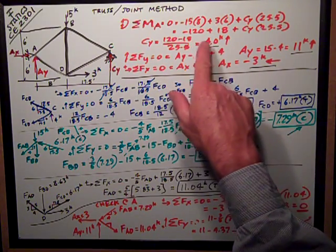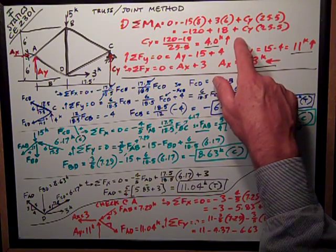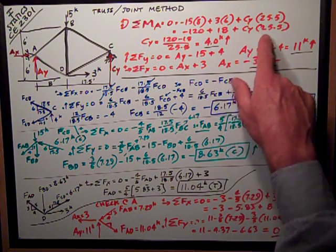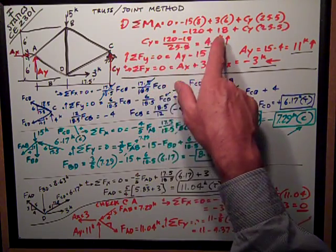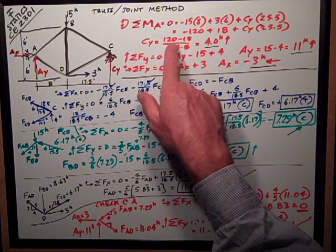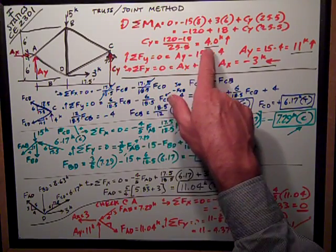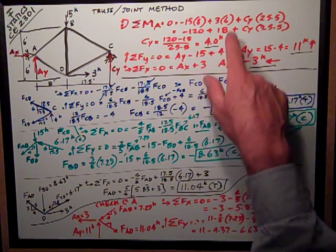Doing all the math, I get negative 120 plus 18 plus CY times 25.5. Moving all those to the other side of the equal sign, I get CY is equal to 120 minus 18 divided by 25.5, 4.0 kips up.